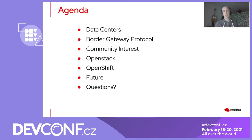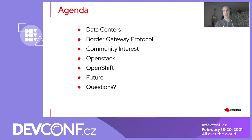This is the agenda. We're going to talk a little bit about data centres and how they've evolved over the last number of years. We're going to introduce the Border Gateway Protocol, and then talk about the community interest in integrating Layer 3 routing protocols, like BGP, into our products OpenStack and OpenShift. Then we'll wrap up with a brief discussion about future activities and take any questions from the audience.